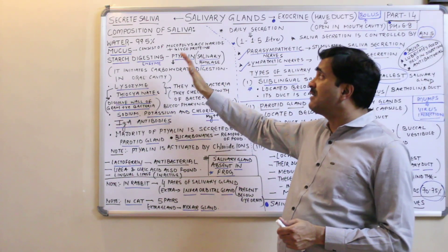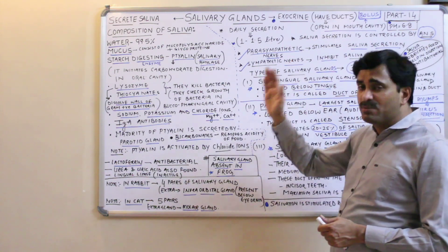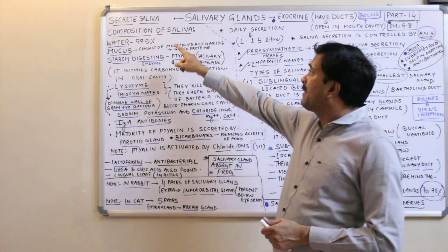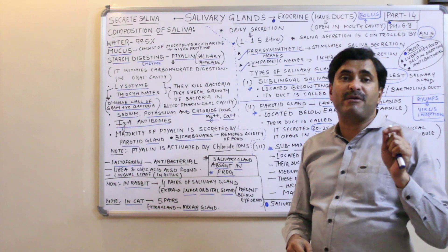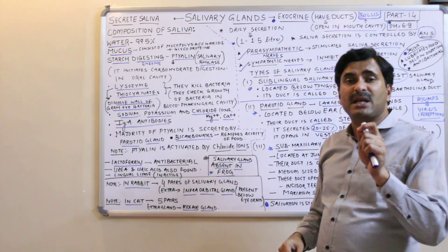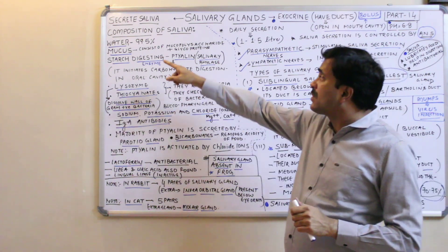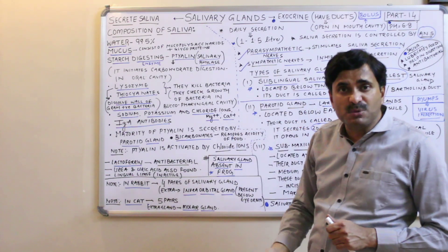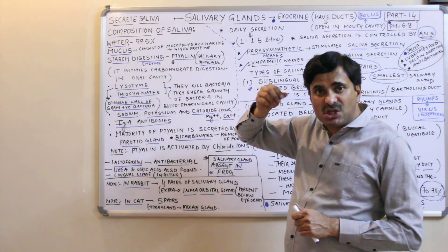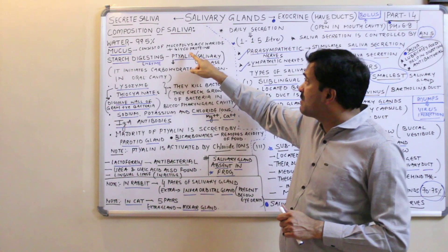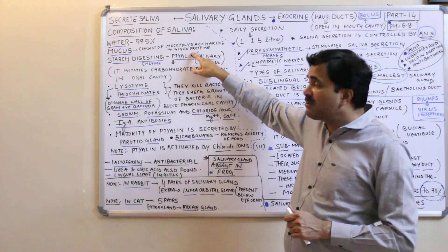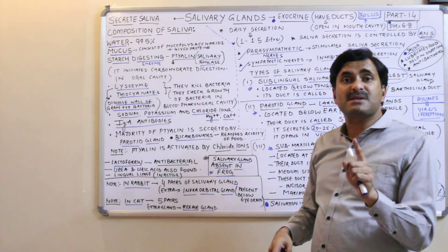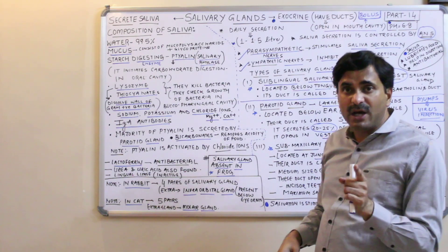Now let's come to the composition of the saliva, which is very important. Water makes up 99.5% of saliva. Saliva also consists of mucus — a sticky substance also called mucine — made of mucopolysaccharides and glycoproteins. This mucus protects the lining of the buccal cavity.